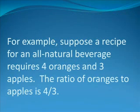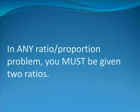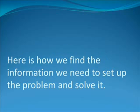For example, suppose a recipe for an all-natural beverage requires four oranges and three apples. The ratio of oranges to apples is four over three. By the way, this is the only time that I know of when someone can legitimately compare apples to oranges. In a ratio proportion problem, you must be given two ratios, although they may be disguised in the wording of the problem, so let's see how to decode the problem. We will first see how to do this in general and then work through several examples.